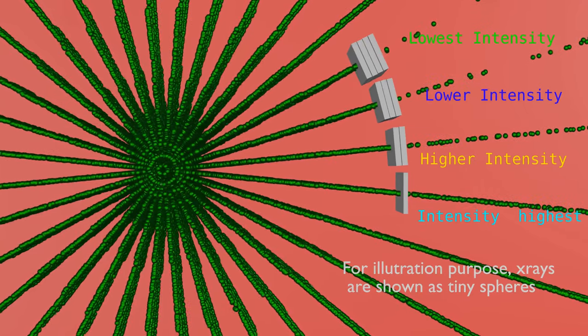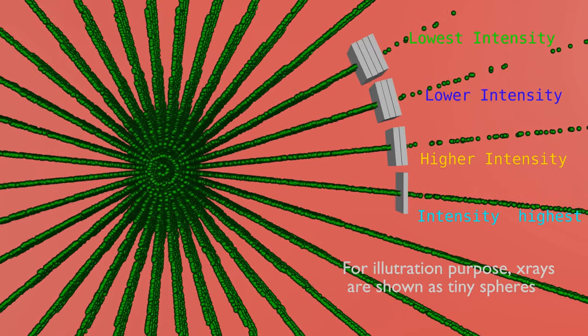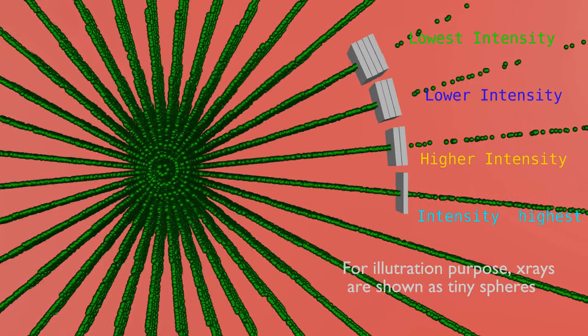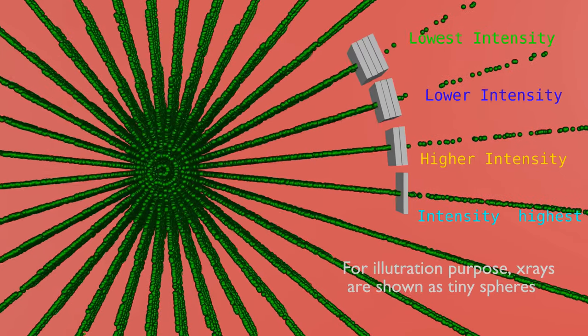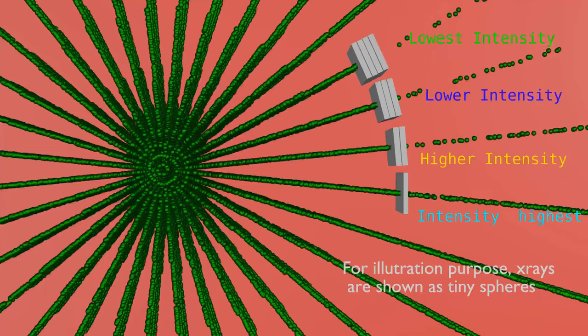So, intensity of x-rays will be lower in the direction of higher thickness. Exactly same thing happens in an x-ray tube, causing intensity variation or heel effect.